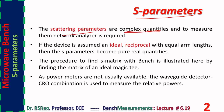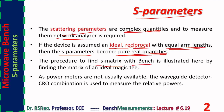Measuring S-parameters requires an instrument called a network analyzer. However, when the device is an ideal reciprocal one with equal arm lengths, the S-parameters become pure real. Hence their measurement becomes quite easy and simple. The procedure to find the S-matrix with the bench is illustrated here by finding the matrix of an ideal magic T. As power meters are not usually available, a waveguide detector and CRO combination is used to measure relative powers.